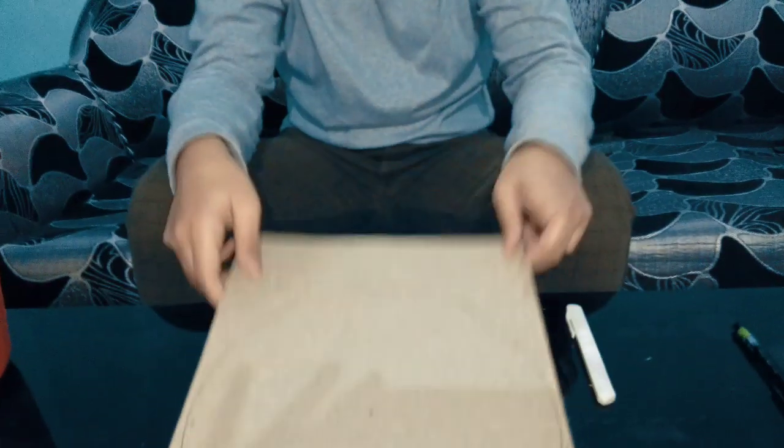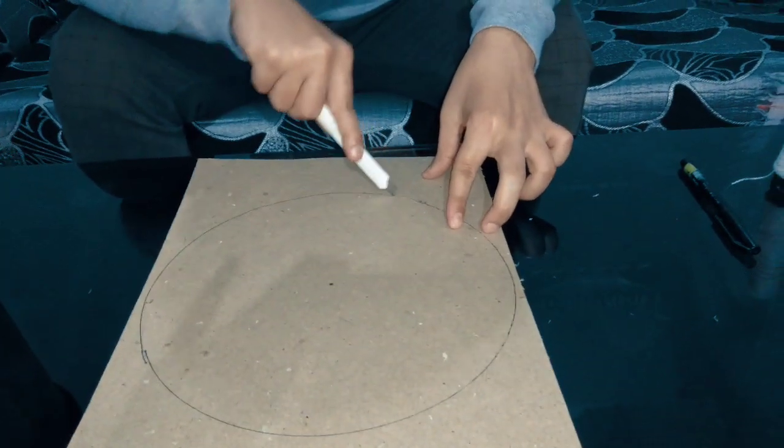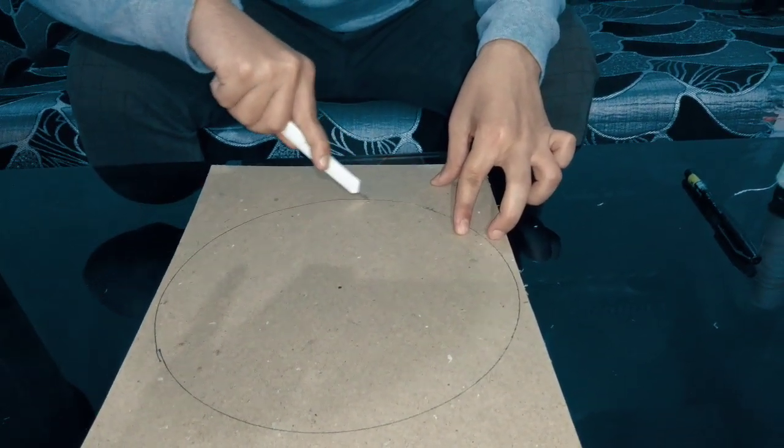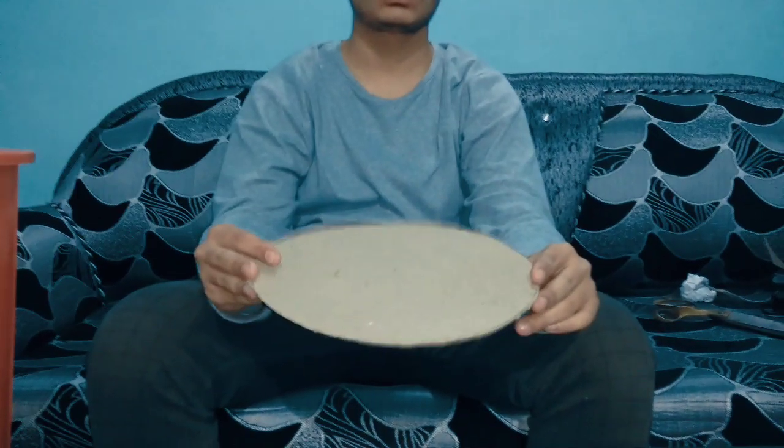First you have to mark the circumference of the dustbin on the cardboard, which I have done already. Then you have to cut the unmarked area of the cardboard. This is how it looks. Now we have to cut it from the center.